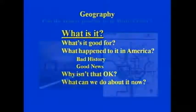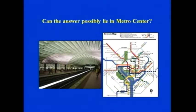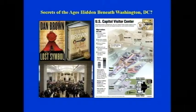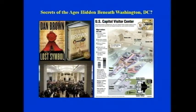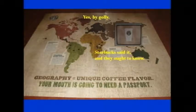So let's start with what is it. Could the answer possibly lie in Metro Center? You've all seen the excitement over Dan Brown's book suggesting that the secrets of the ages are hidden beneath Washington, D.C. Well, I was walking through Metro Center and I found the answer to the greatest mystery of them all: what is geography? Geography equals — in mathematical precision — unique coffee flavor. That was Starbucks. They said it, and they ought to know.